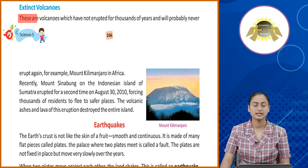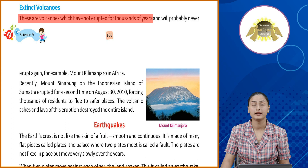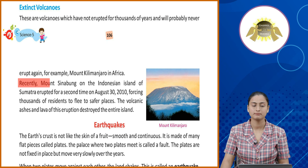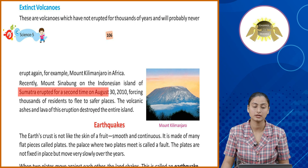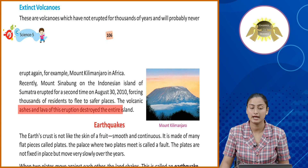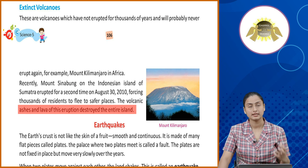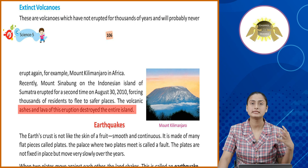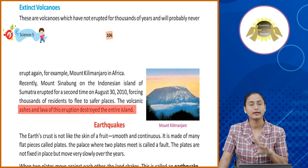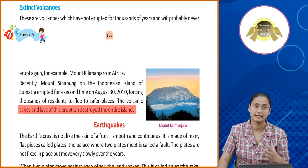Extinct volcanoes are those which have not erupted for thousands of years and will probably never erupt again. For example, Mount Kilimanjaro in Africa. Recently, Mount Sinabung on the Indonesian island of Sumatra erupted for a second time on August 30, 2010, forcing thousands of residents to flee to safer places. The volcanic ashes and lava of this eruption destroyed the entire island. Tisra type extinct volcano hota hai — ye aise volcanoes hote hai jo recent years mein erupt nahi hue, aur shayad kabhi future mein honge bhi nahi. Indonesian island mein ek volcano hai jo sirf 2 baar tak erupt hua hai, jis ki wajah se island mein damage bhi aaya hai.